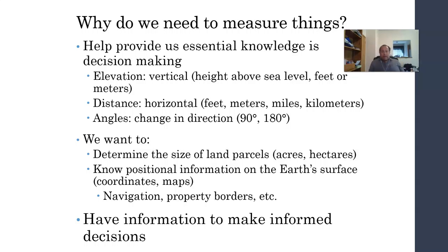We need to make sure we plant trees at a far enough spacing that we encourage competition, but not so much that they kill each other off. Angles are important in terms of direction, compass, and pacing — being able to measure and navigate through the forest. We'll want to know the size of land parcels, using compass and pacing, GPS, or GIS — geographic information systems — which we'll cover in this class. We also want to know positional information: where we are on the earth, where this property is, and where its borders are.